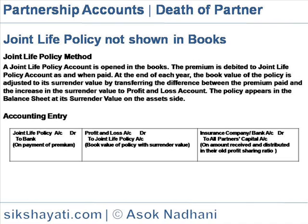The policy appears in the balance sheet at its surrender value on the assets side. The accounting entries are: Joint Life Policy account debit to bank on payment of premium; Profit and loss account debit to Joint Life Policy for the difference between book value and surrender value; and insurance company or bank account debit to all partners' capital on amount received and distributed in their old profit-sharing ratio.